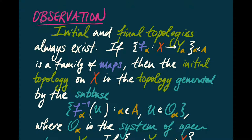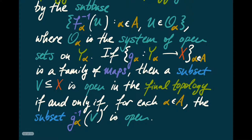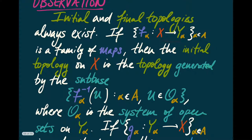The initial and final topologies always exist. The initial topology is generated by the sub-base where we take open sets of Y_alpha and take their inverse images inside X under each map F_alpha. Dually, if we have maps into X from Y_alphas, we declare a subset V of X to be open if and only if its inverse image under all the G_alphas is open — giving exactly the final topology. One familiar example: the subspace topology on X is the initial topology with respect to the inclusion map from X into Y.